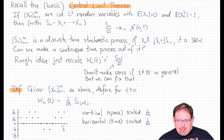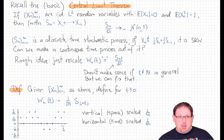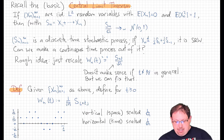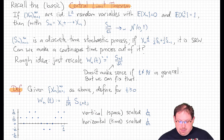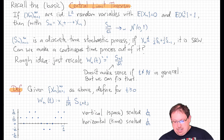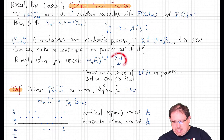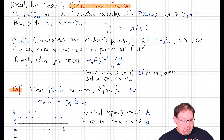But we'd like a statement not about the endpoint, and we'd also like a statement not just about a discrete stochastic process. Can we make this into a continuous-time stochastic process? The answer is yes. Here's the rough idea: instead of S_n over root n, we take S_{nt} over root n for a continuous-time t.